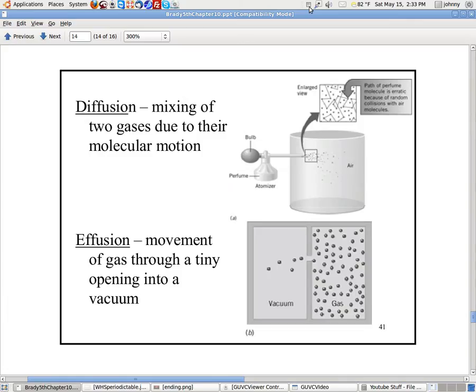In this video we're going to be talking about diffusion and effusion. Diffusion is basically the mixing of two gases due to their molecular motion. So when someone would spray a perfume bottle, like you see in this picture here, it takes a little while, but eventually the smell is able to travel across the room and everyone can smell it. Like deodorant and things like that where you can smell them. Even someone passing gas is an example of diffusion.